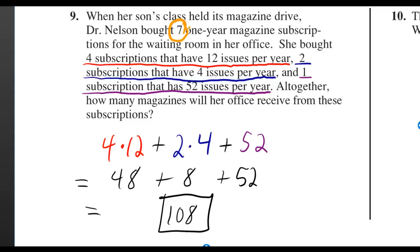Don't let the seven confuse you. That's just the number of different magazines that she bought, so that's equal to the four plus the two plus the one.